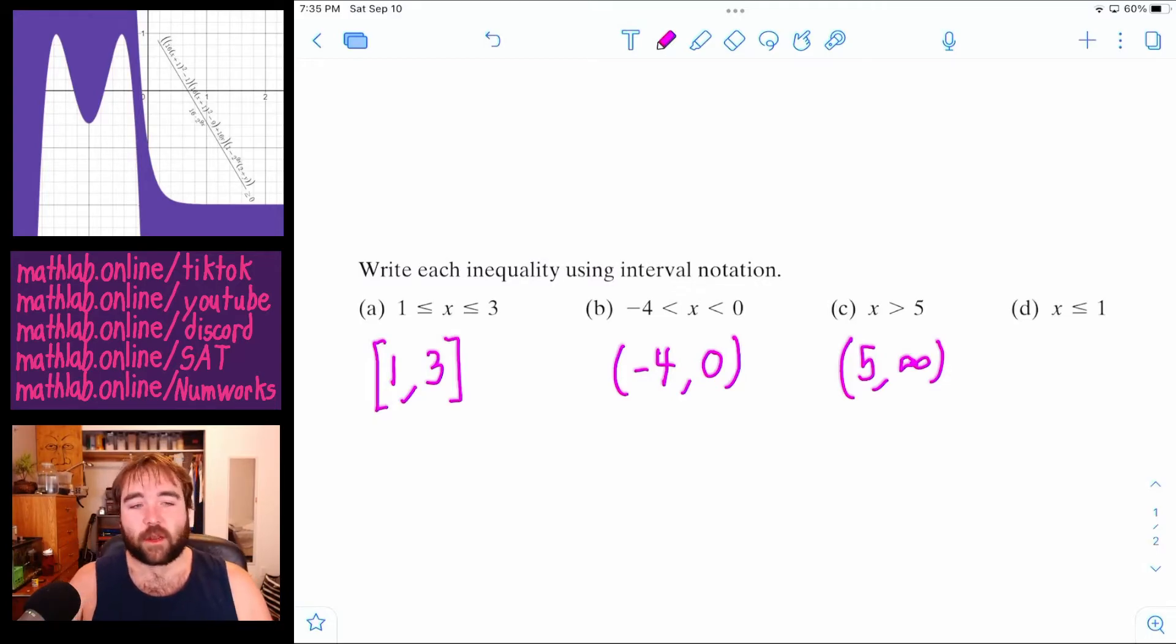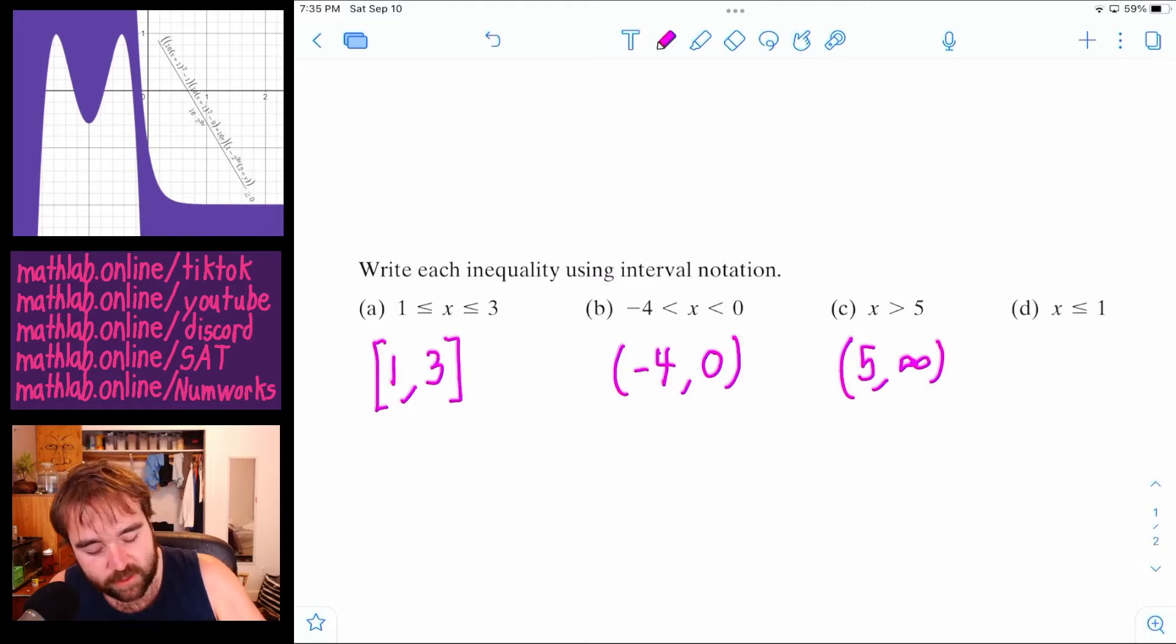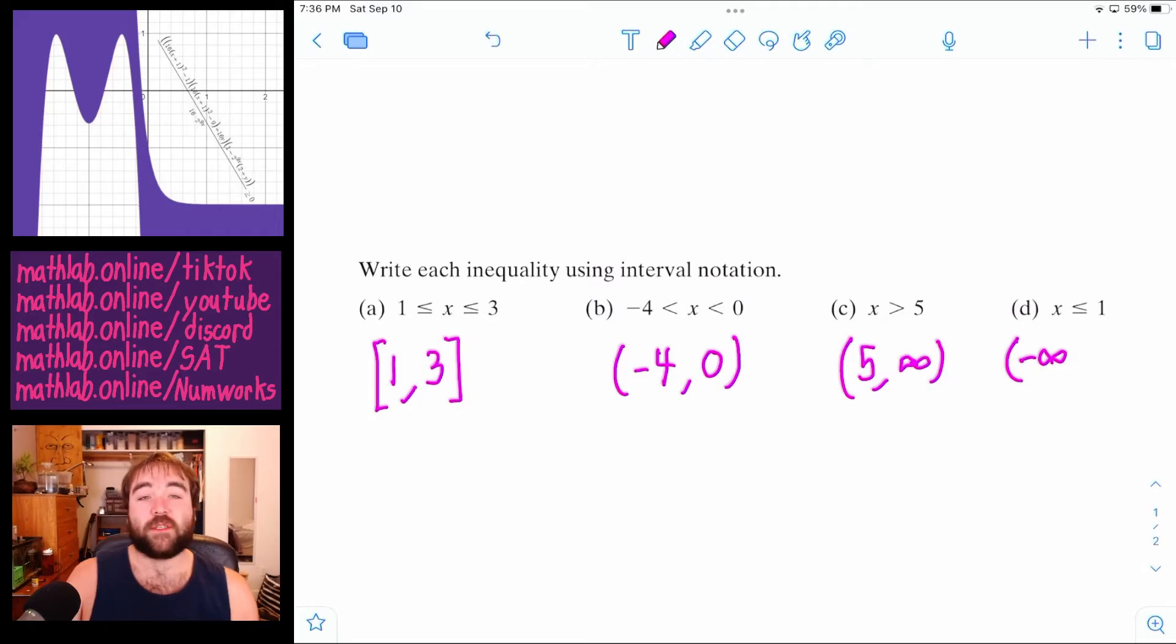Infinity or a negative infinity. Like on the next one, x has to be less than or equal to one. So the smallest thing x can be is negative infinity. And we'll put a parenthesis on that because just like positive infinity, we can never get to negative infinity.